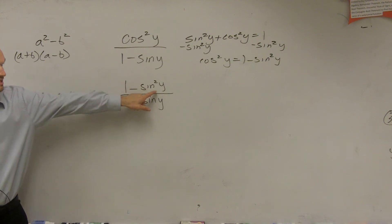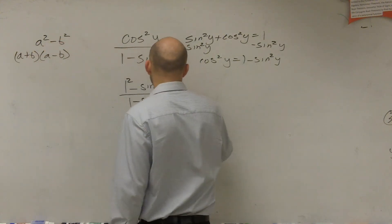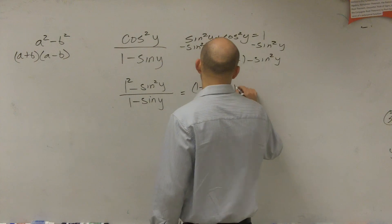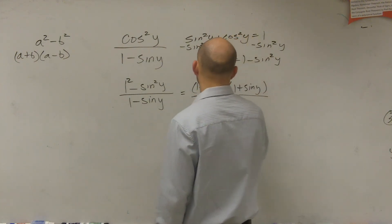Well, this would be sine times sine, and this would be 1 times 1. Because you can actually rewrite that as 1 squared, right? So the top term can actually be rewritten as this: 1 minus sine of y times 1 plus sine of y all over 1 minus sine of y.